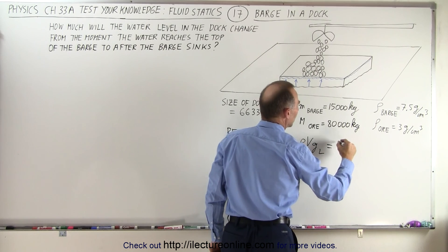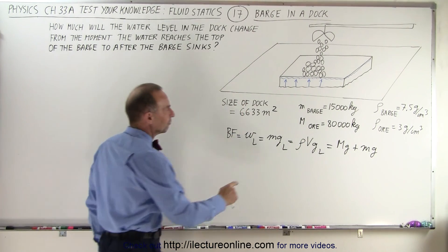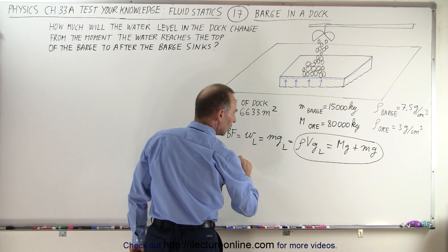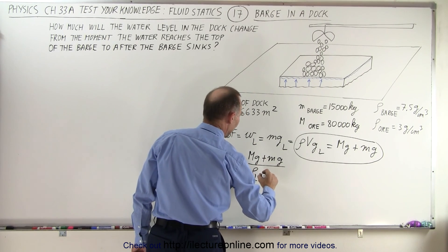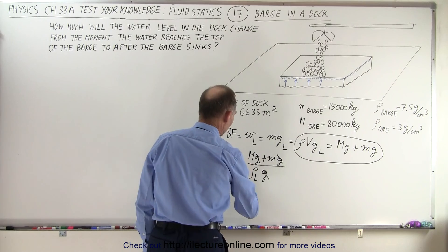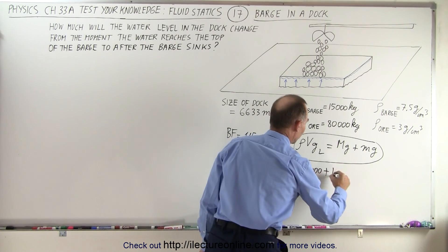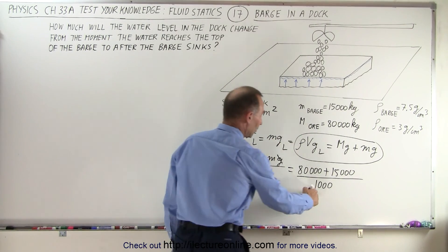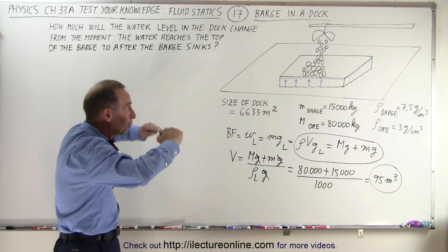The buoyancy force at that moment equals the weight of the ore plus the weight of the barge. This means the volume of displaced liquid can be found by solving this equation: volume equals the mass of the ore plus the mass of the barge divided by the density of water. So the mass of the ore is 80,000 plus the mass of the barge, which is 15,000 — that's 95,000 together. Dividing by 1,000 kilograms per cubic meter gives us 95 cubic meters. That's the volume of displaced liquid just at the moment the water reaches the very top of the barge.